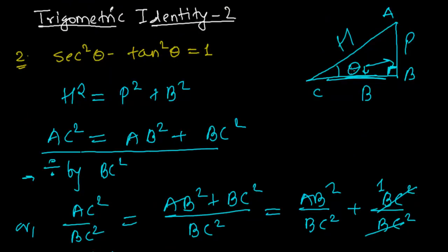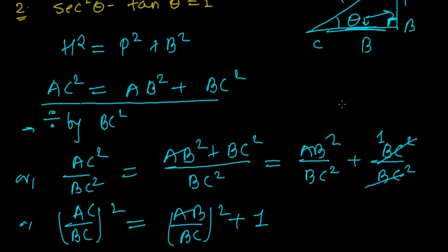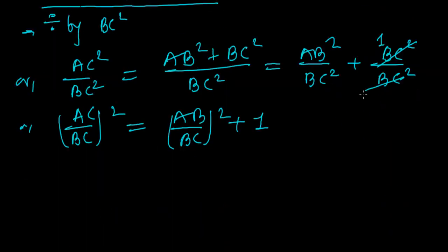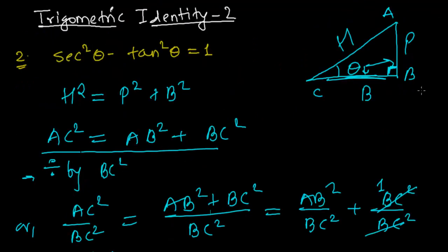AC upon BC, that is H upon B. So AC upon BC squared is equal to AB upon BC squared plus 1.